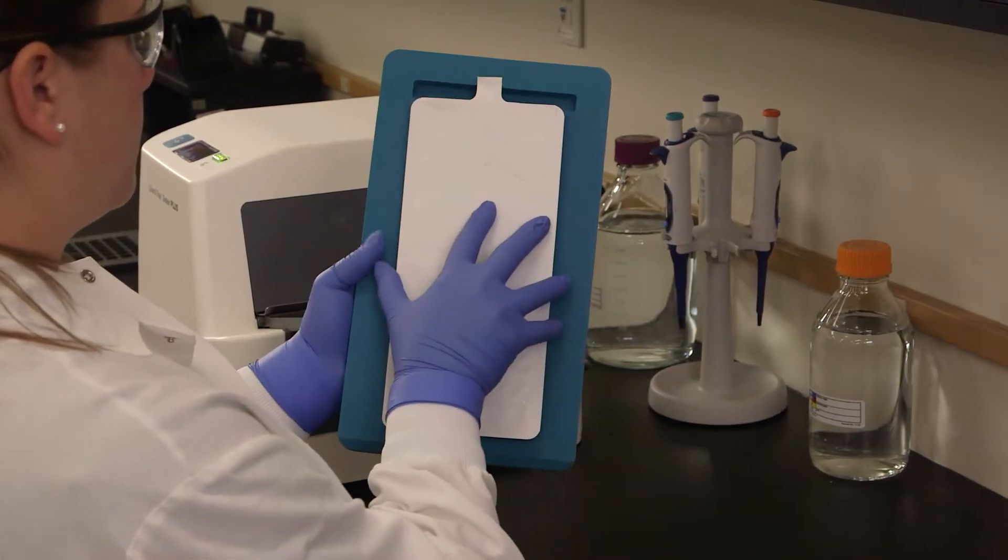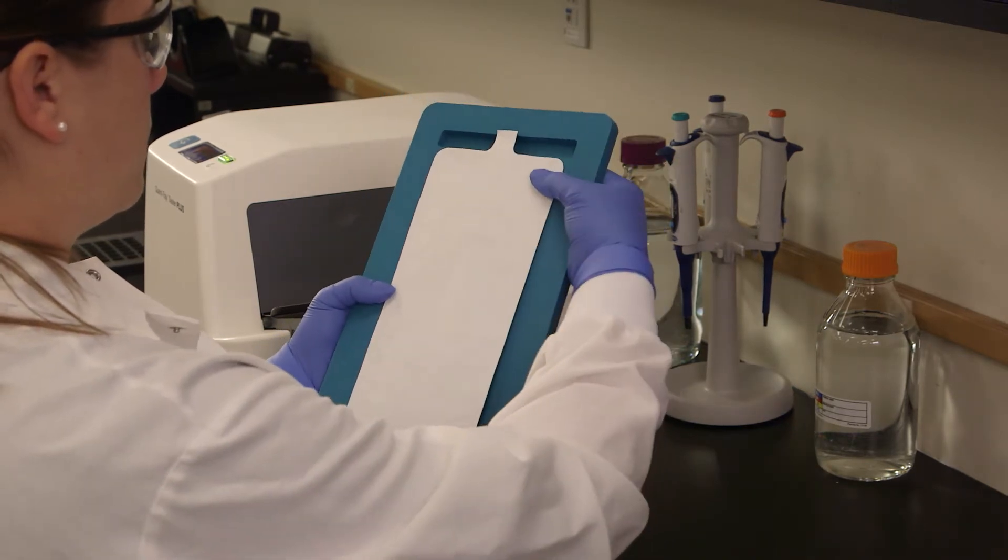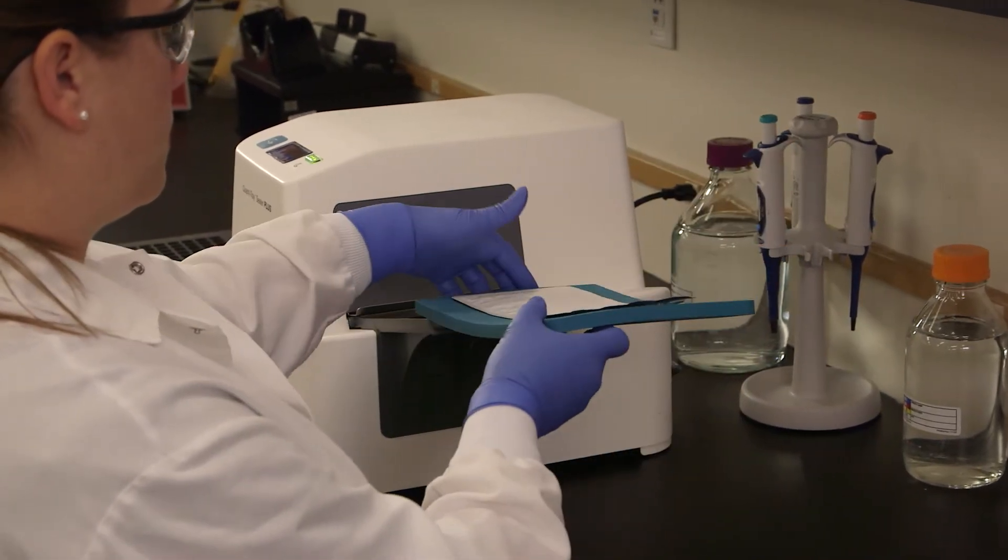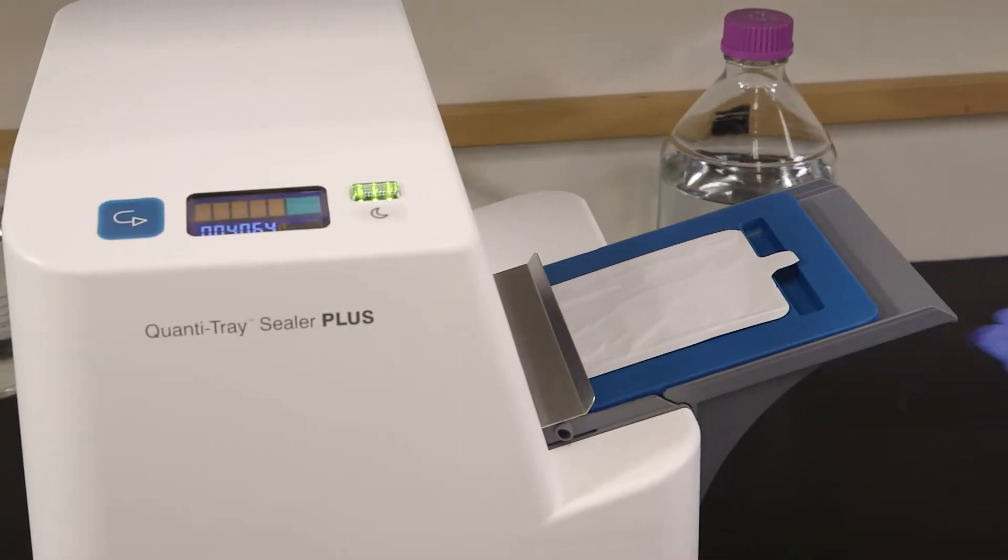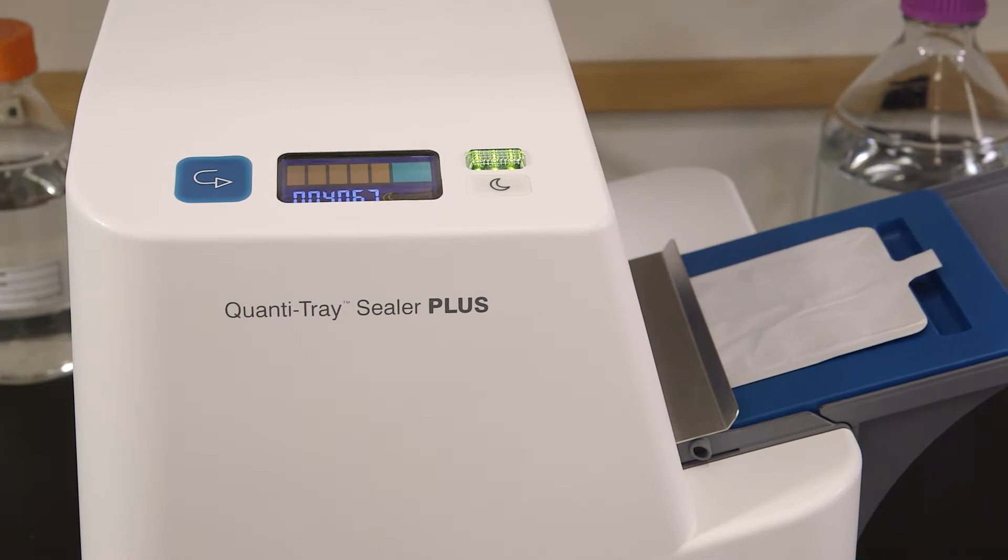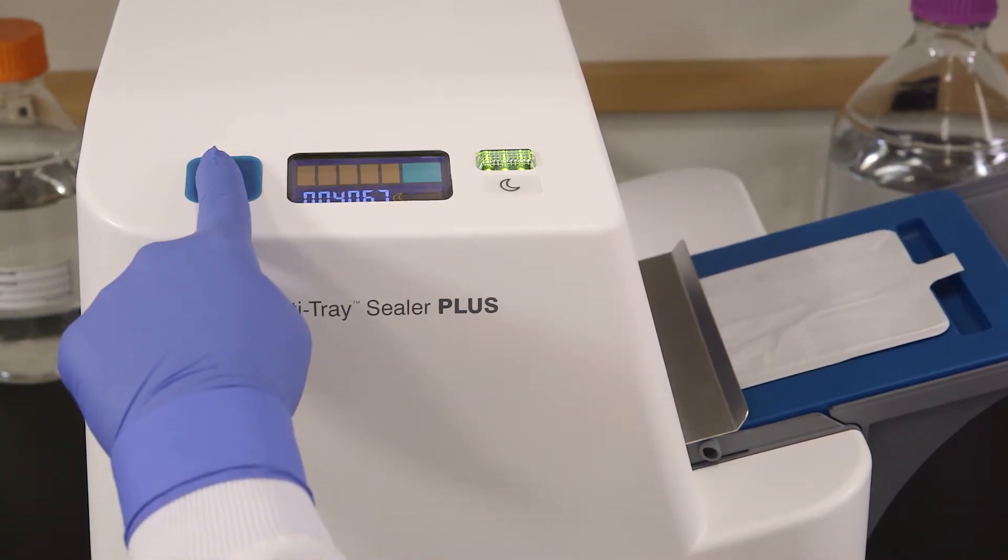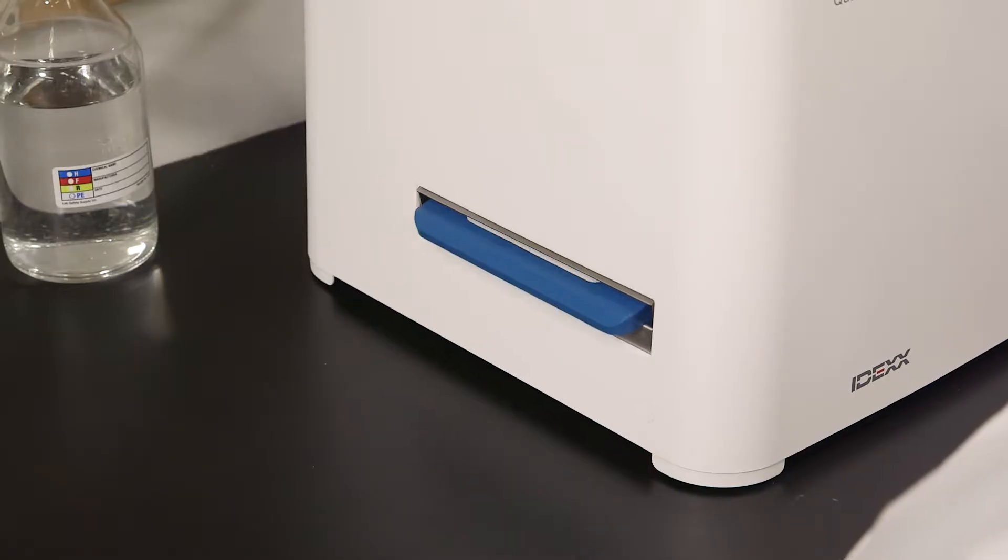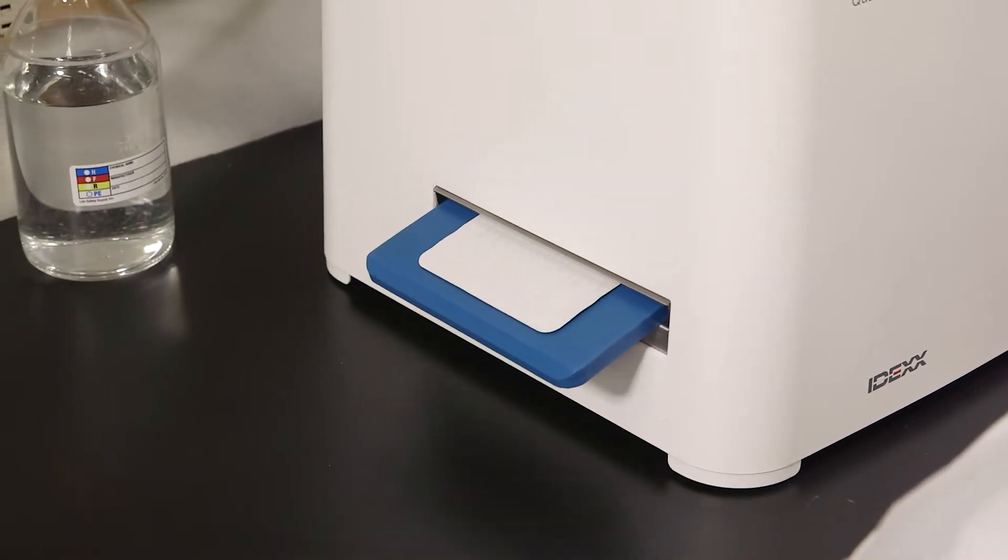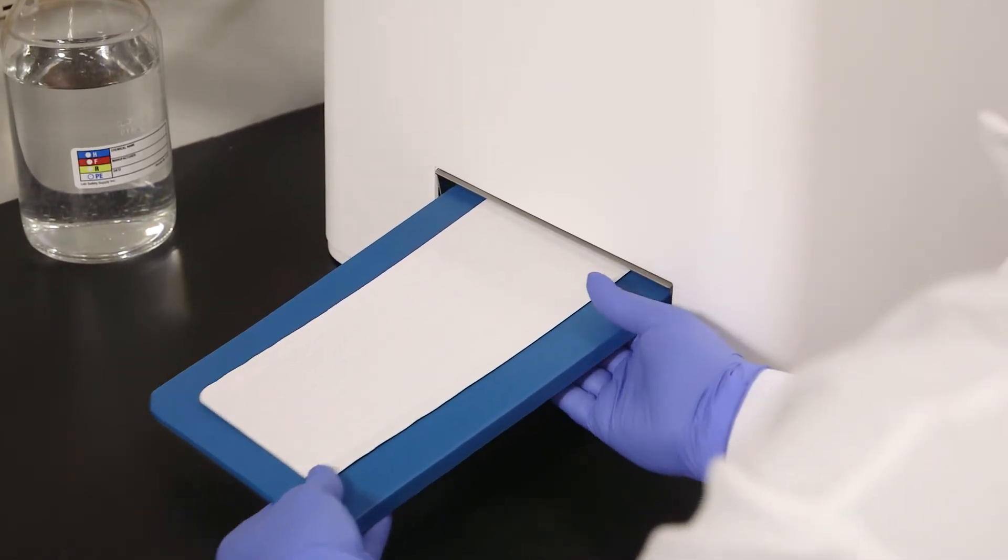Place the filled Quantitray on the rubber insert, making sure each well fits its corresponding hole. Push the insert with tray into the sealer until the sealer grabs the tray and pulls it into the slot. If you need to reverse the motor, press and hold the reverse button. However, do not reverse the motor if the rubber insert is completely inside the sealer. The sealer distributes the sample mixture into the Quantitray wells, seals the wells, and partially ejects the sealed tray.